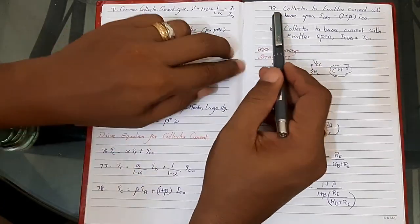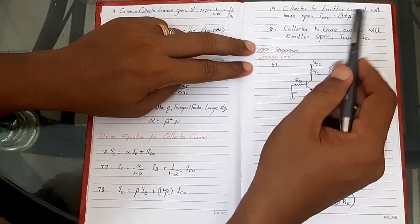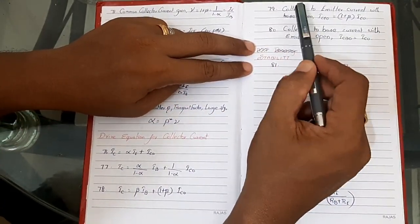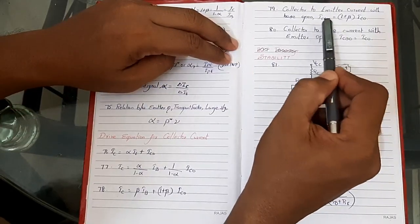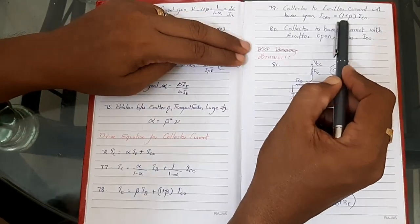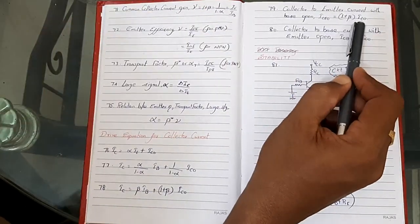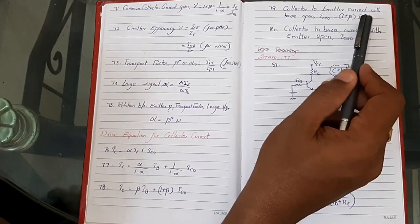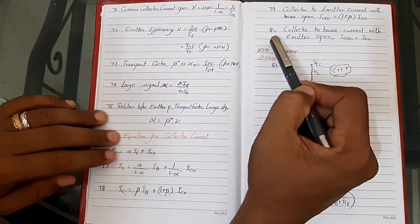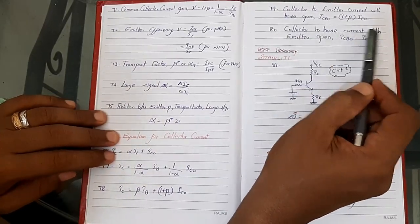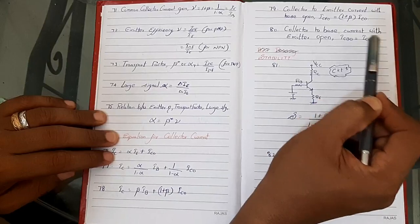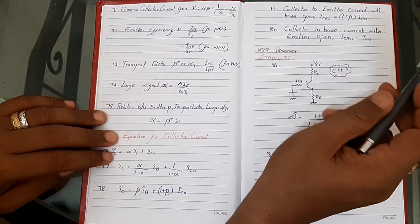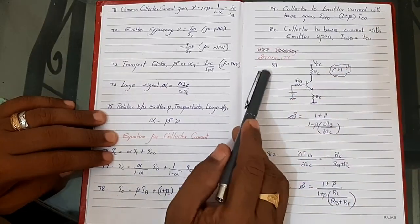Number 79: Collector-to-emitter current with base open, ICEO = (1+β)·ICO. Number 80: Collector-to-base current with emitter open, ICBO = ICO.